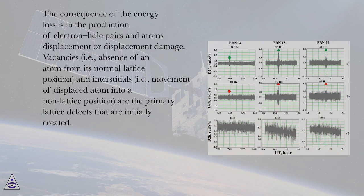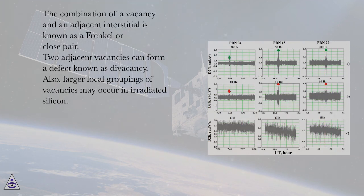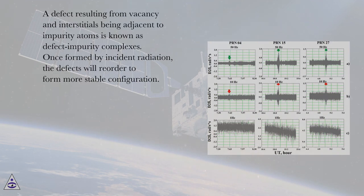Vacancies, i.e., absence of an atom from its normal lattice position, and interstitials, i.e., movement of displaced atom into a non-lattice position, are the primary lattice defects that are initially created. The combination of a vacancy and an adjacent interstitial is known as a Frenkel or close pair. Two adjacent vacancies can form a defect known as divacancy. Also, larger local groupings of vacancies may occur in irradiated silicon. A defect resulting from vacancy and interstitials being adjacent to impurity atoms is known as defect impurity complexes.